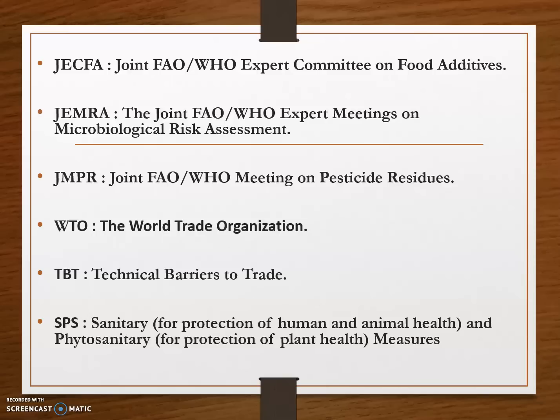Next is SPS — Sanitary and Phytosanitary Measures. Sanitary refers to the protection of human and animal health, and phytosanitary refers to the protection of plant health. The SPS measures covered by the WTO agreement are those aimed at the protection of human, animal, or plant life or health from certain risks.